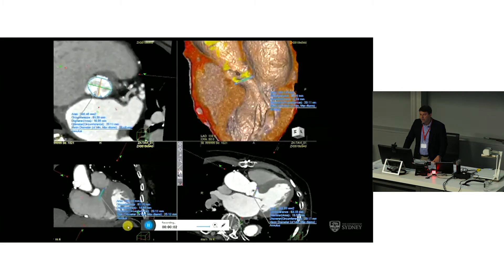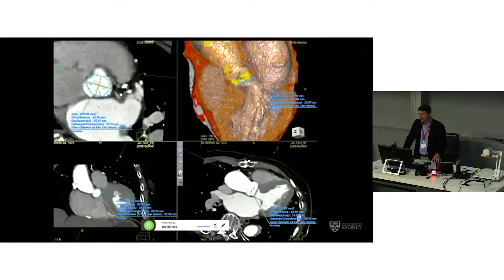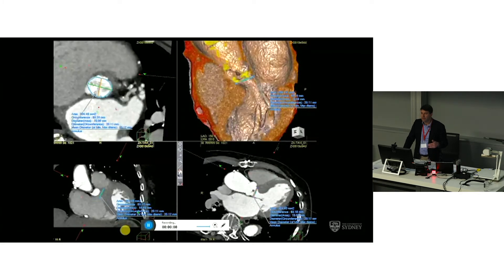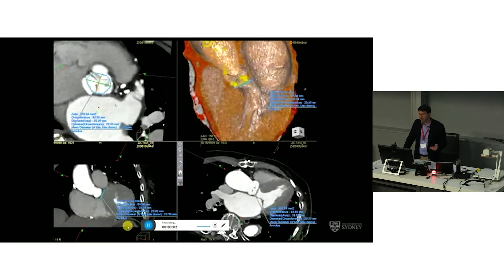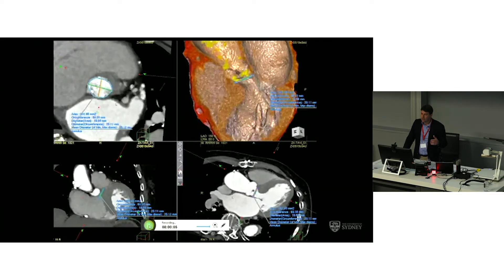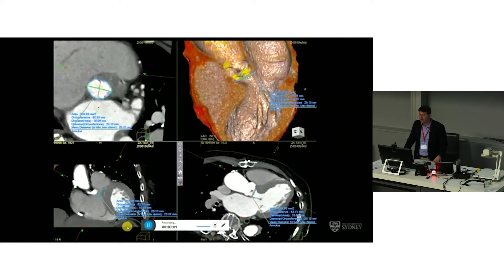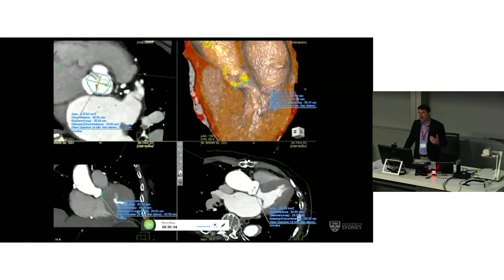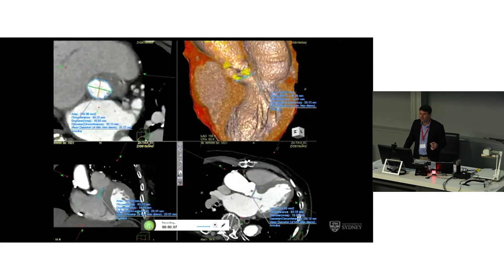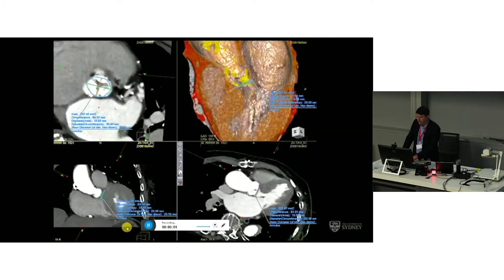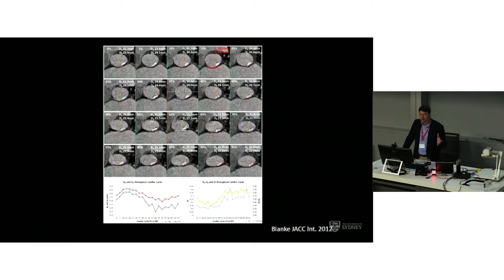ECG-gating is important because the annulus is a very mobile structure, so we need to remove that motion. There are also important differences in the size of the annulus during the cardiac cycle — the annulus is generally larger in systole, so systolic images are most important. There can be a fluctuation of around 5% between systolic and diastolic phases, so having a range of phases is preferable and access to systolic phases is important.